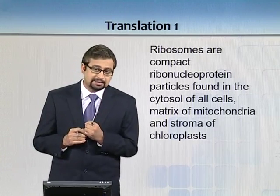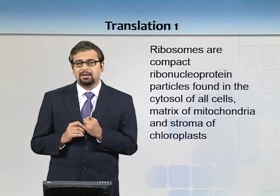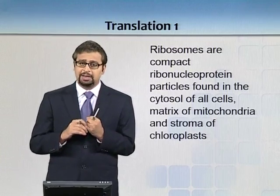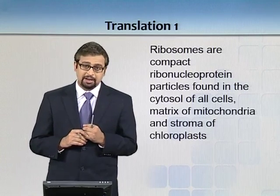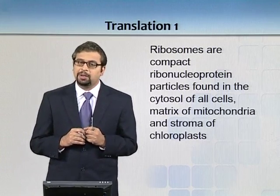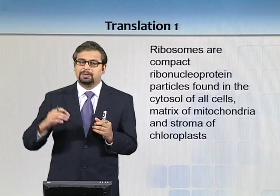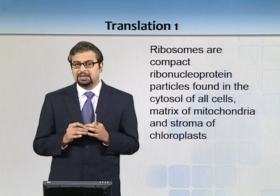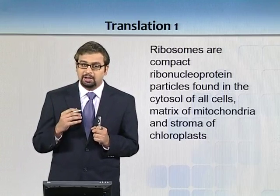In eukaryotic cells, messenger RNA has to come out of the nucleolus of the nucleus, through the nuclear pore, and ultimately it will be translated in the cytosol. In bacteria we don't have that issue. Their presence in mitochondria is significant because mitochondria are the powerhouse of the cell, meaning that mitochondria can produce their own proteins.